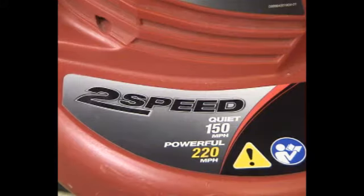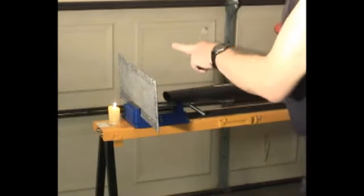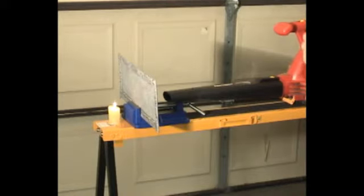This leaf blower puts out 150 to 220 miles per hour of directed wind. So let's see if it will blow that handle out with nothing but this fabric holding strong. Let's take a look and see what it does.